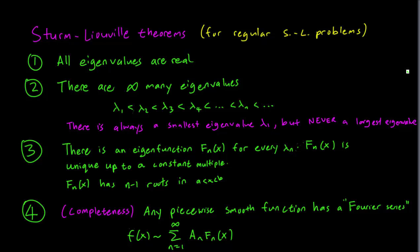The fourth theorem relates to a property that mathematicians like to call completeness. We say that the functions f and x form a complete set and this means that any piecewise smooth function on the interval a b can be written down as a Fourier series of these eigenfunctions. In other words you can write down fx as the sum n equals 1 to infinity of a constant times fn x for all of these eigenfunctions.